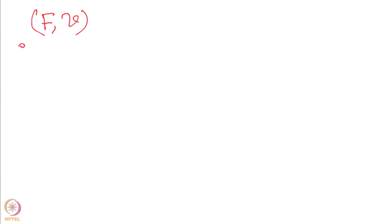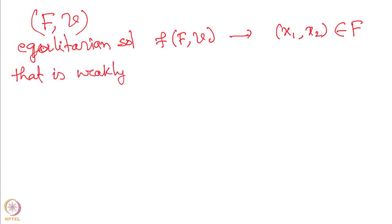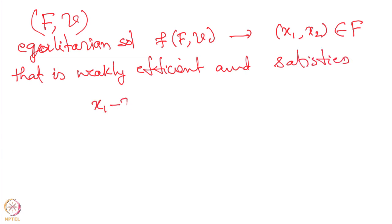The egalitarian solution of bargaining problem (F, v) is the unique point (x1, x2) in F that is weakly efficient and satisfies x1 − v1 = x2 − v2. That is, each player gains the same amount above their disagreement payoff.